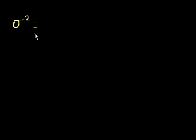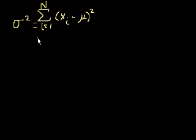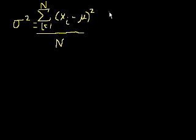Variance of a population is equal to: when you take each of the data points x sub i, you subtract from that the mean, you square it, and then you take the average of all of these. So you add the squared distance for each of these points from i equals 1 to n, and you divide it by n. Let's see what happens if we multiply out the square term and see where it takes us — I think it'll take us someplace interesting.